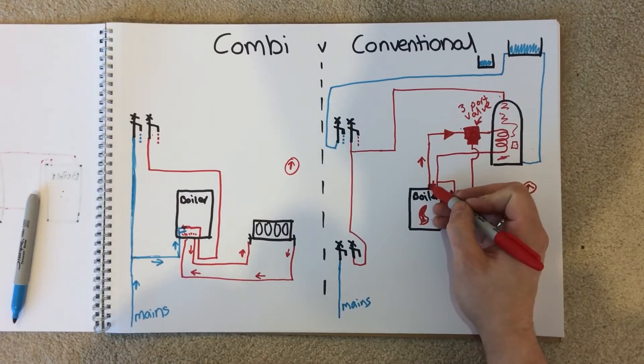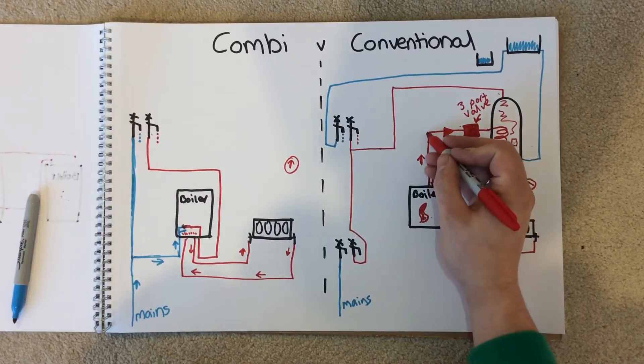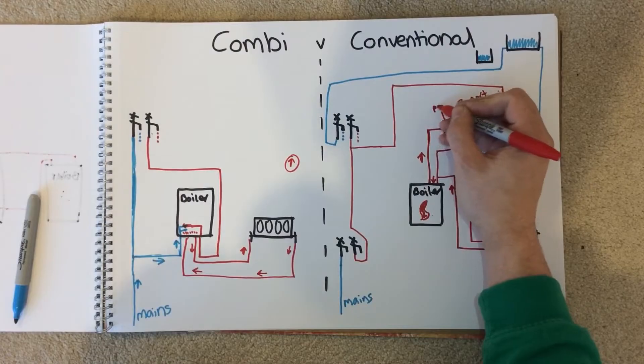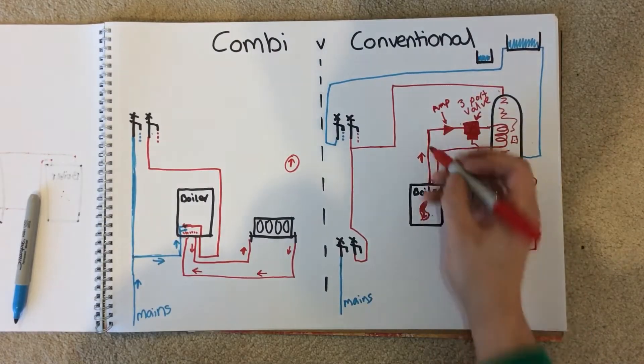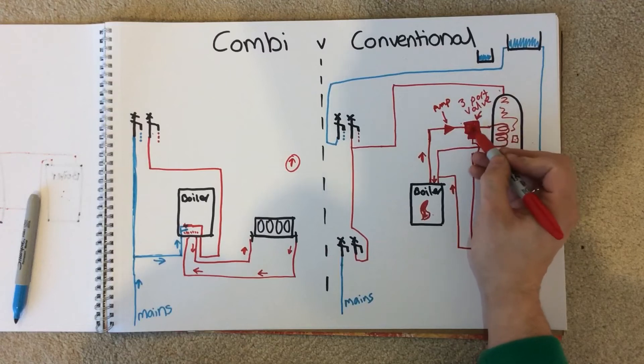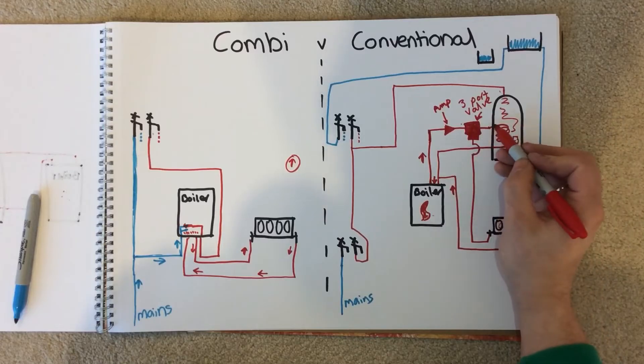The water from the boiler goes to the pump - this is just a schematic symbol for it - and then it goes to the 3-port valve. This 3-port valve then tells the water where to go: either to your hot water, which we're not going to be talking about, or to your heating.